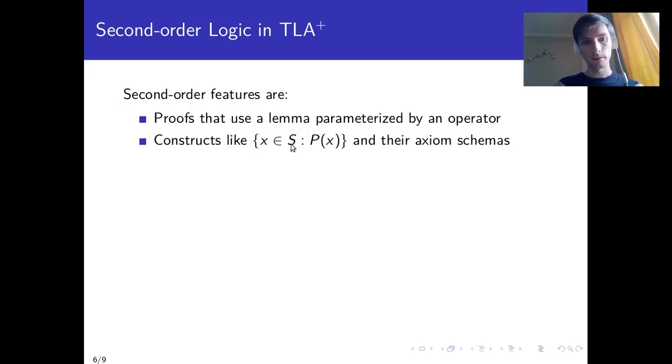As a special case, we can see constructs, primitive constructs like set comprehension for example, but also choose expression functions and so on, as second order constructs, with not axioms but axiom schemas, parameterized by an operator, predicate p in that case, and those axiom schemas need to be instantiated for the encoding.